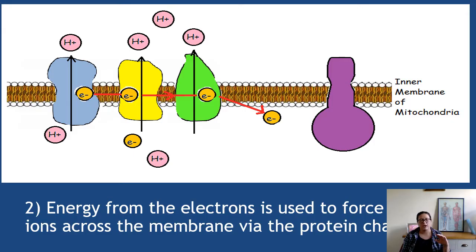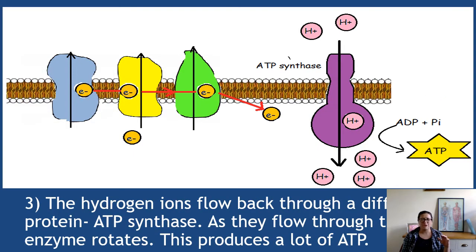Step three: we've got a huge accumulation of hydrogen ions on one side of the membrane and less on the other. And the idea is the hydrogen ions are going to flow back through a different protein called ATP synthase. As they flow through it the enzyme's going to spin around, it's going to rotate, and that's going to create a lot of ATP. So there's quite a lot happening in this diagram.